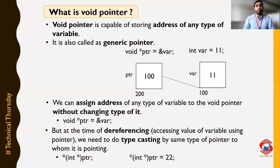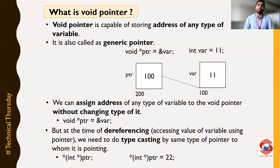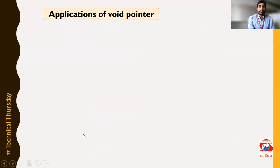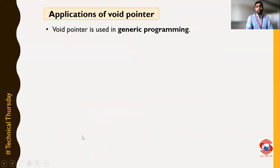Two points we need to understand: when we are assigning an address to the void pointer, we don't have to do anything. But when we are dereferencing that void pointer, we need to do typecasting, because we don't know the scale factor of the void pointer. Now, where are such pointers used? Let us talk about the applications of this void pointer.